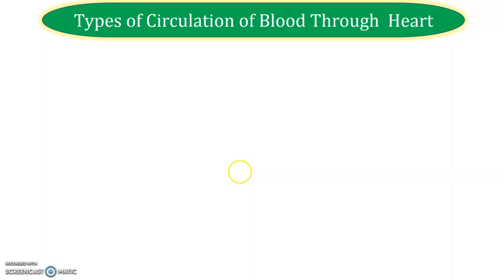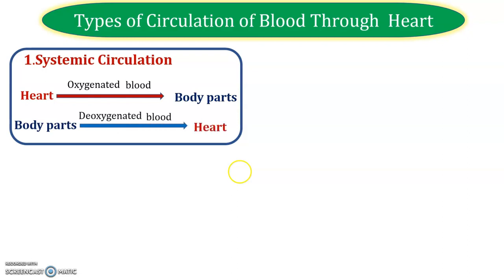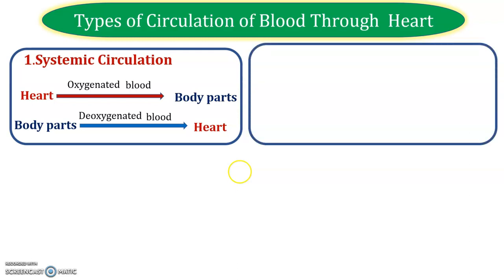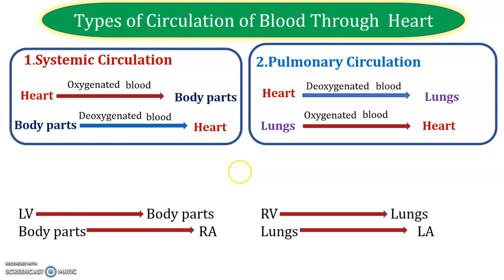Now let us discuss the types of circulation. The first is systemic circulation — blood flows from the heart to the body parts and back to the heart, carrying oxygenated and deoxygenated blood. The second type is pulmonary circulation — blood flows from the heart to the lungs and back to the heart. The difference: pulmonary circulation transfers blood from heart to lungs, while systemic circulation transfers blood from heart to different body parts.